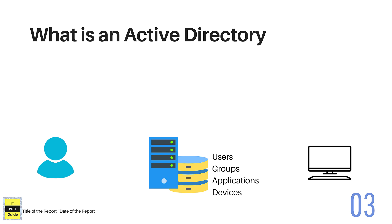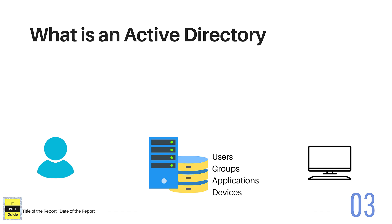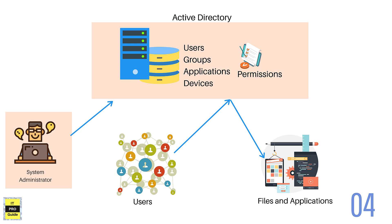Active Directory contains a database and holds information about users and devices — we call these objects and their attributes. Based on these stored details, Active Directory can manage permissions and control access to network resources. For a better understanding, look at this picture. We have an Active Directory, a system administrator handling the Active Directory, and other applications, users, files and applications.